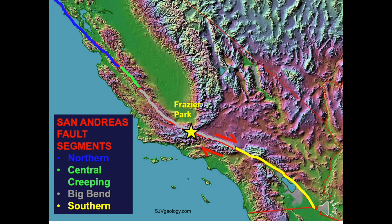Major earthquakes, the type that caused the Earth's surface to rupture, occur about every 150 to 200 years on the San Andreas Fault. But differing earthquake frequencies divide the San Andreas Fault into four color-coded segments: the northern, central creeping, big bend, and southern segments. Fraser Park lies along the big bend segment. The big bend segment is so named because of a lazy 40-degree S-shaped turn in the fault trace. Having such a turn causes unusual stresses and landforms adjacent to the fault.